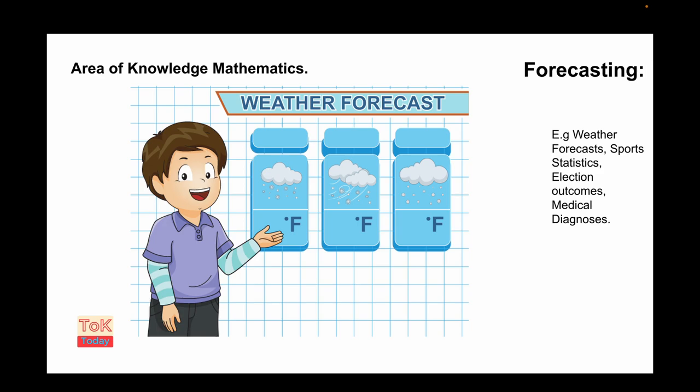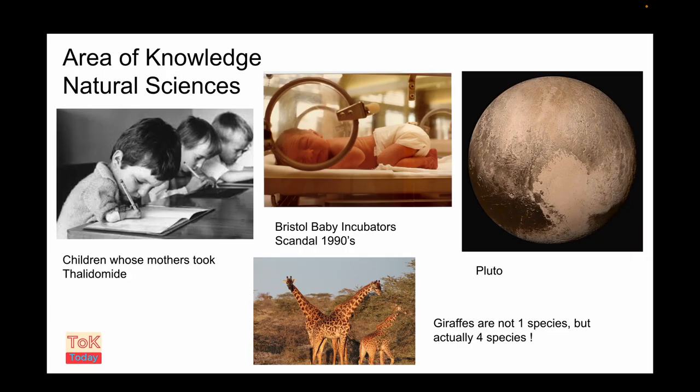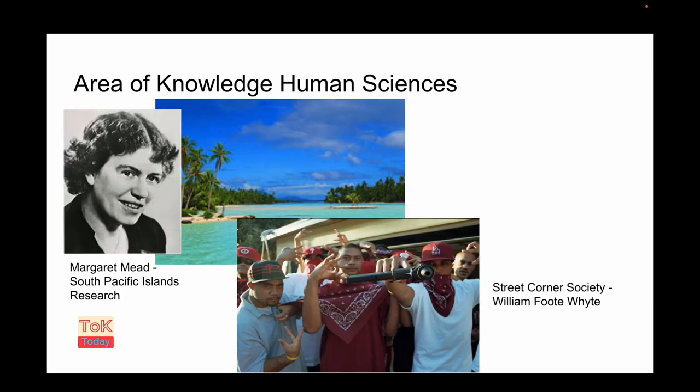And so we have forecasting from AOK maths. That's fairly self-explanatory. Some misrepresented knowledge from AOK history. Now these examples from AOK natural sciences are fairly well known and are well documented if you're not familiar with them. But these examples from AOK human sciences are two personal favorites of mine and it would be too indulgent to go into them in this video, but they can be replaced with your own favorites if you're not familiar with these ones.